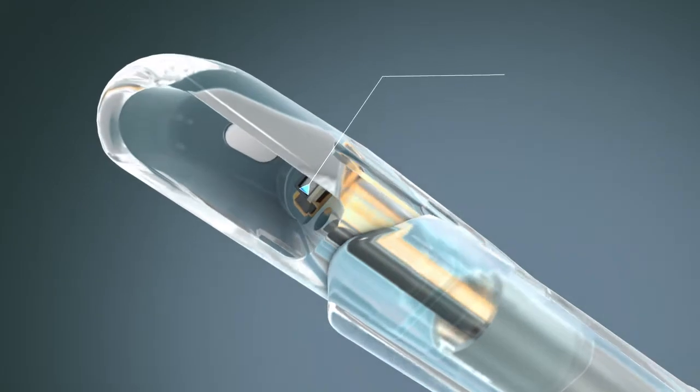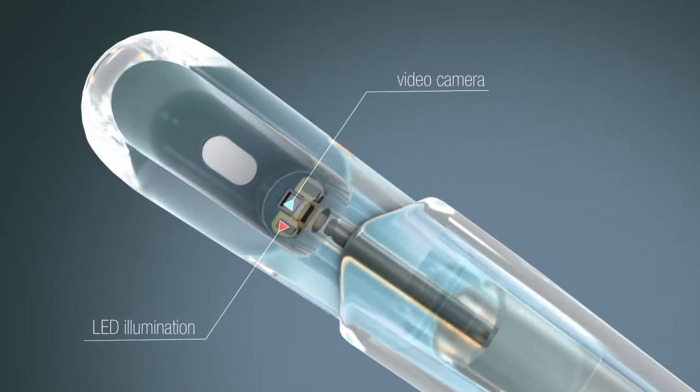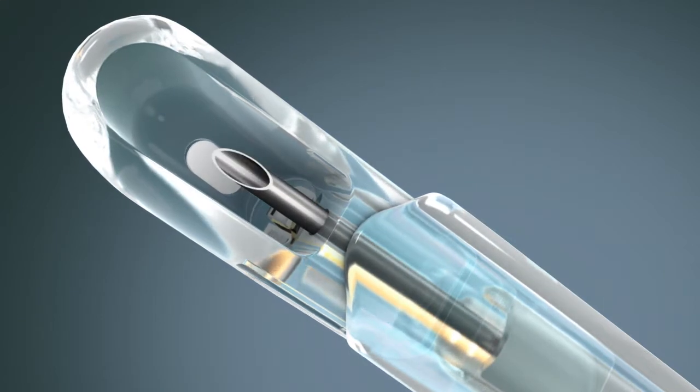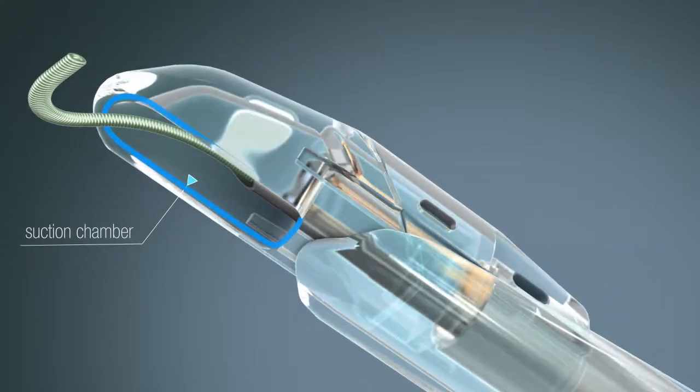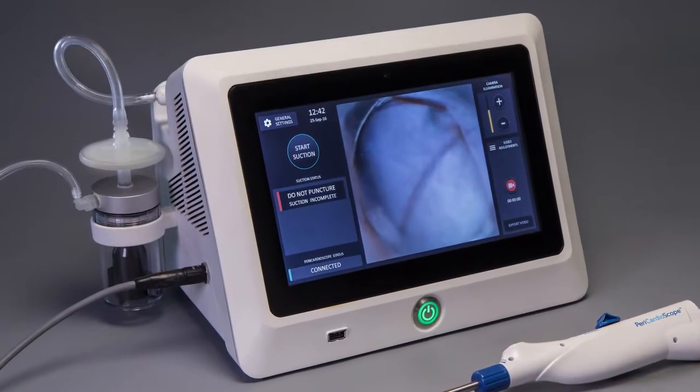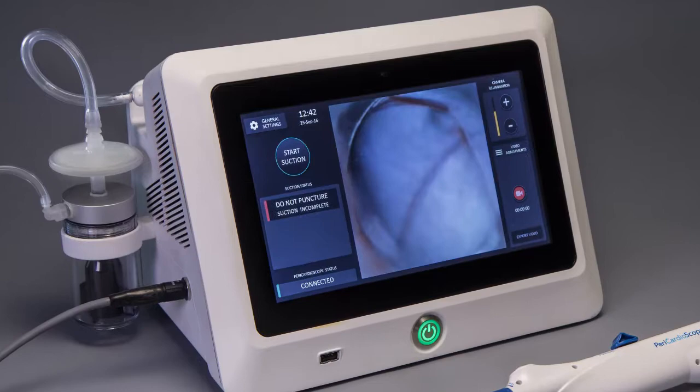A video camera helps the surgeon identify tissues and keep on track. Safe entry to the pericardium is achieved with a suction chamber so that the needle always remains within the device. A console supports the pericardioscope and displays the video.